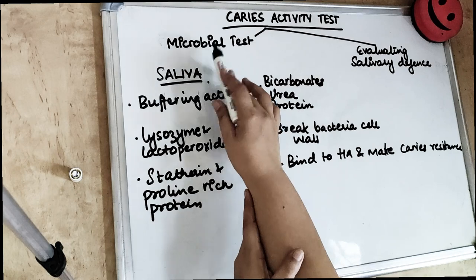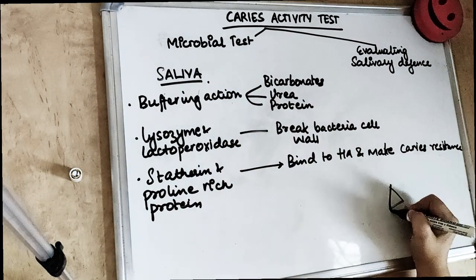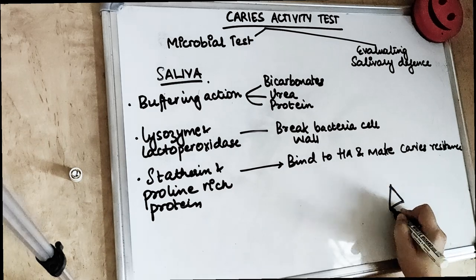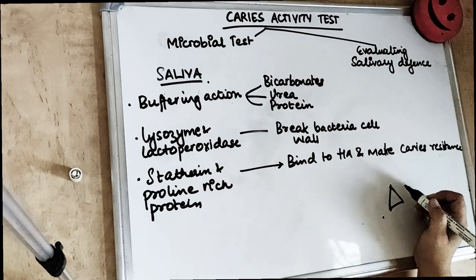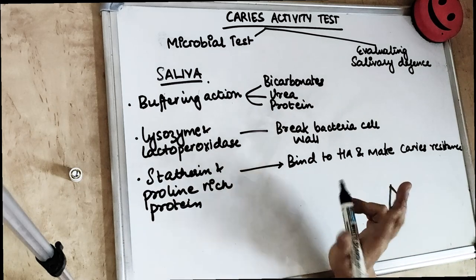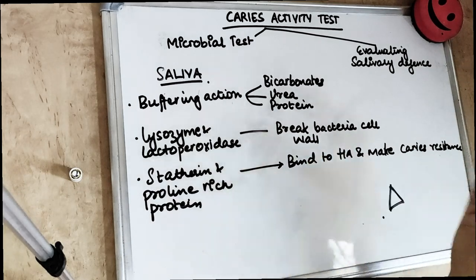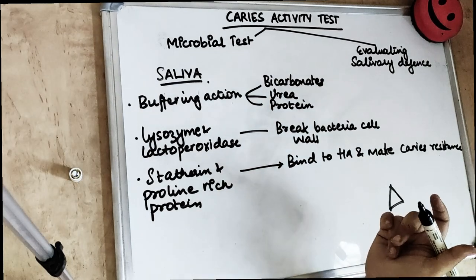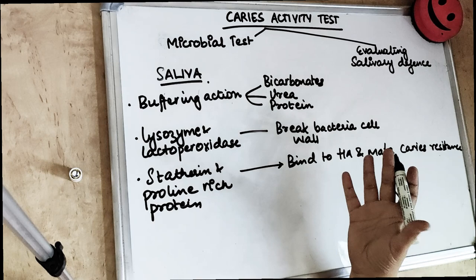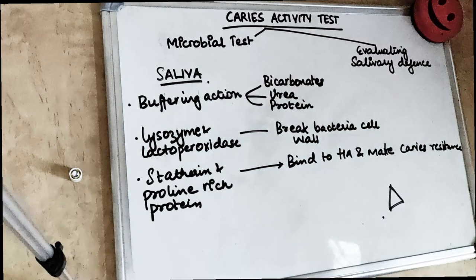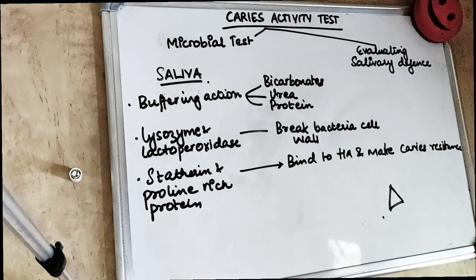We all know about the caries triangle: the host, the tooth, and the agent which is our bacteria. What we are doing is working on two things — one is the agent, which is the bacteria, and the other is the saliva, which relates to the host. By testing these things, we come to know the caries activity in that individual.